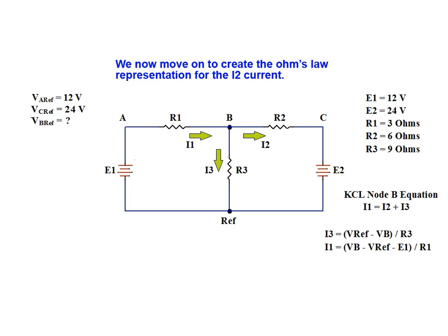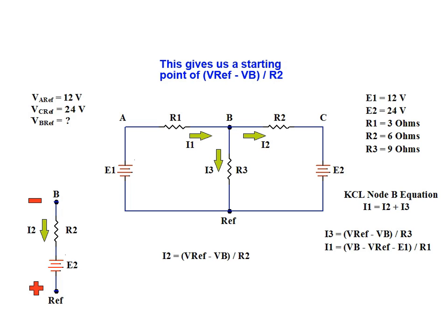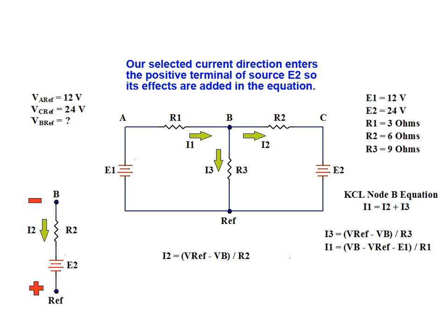Lastly, we move on to create the Ohm's law representation for the I2 current. In order for current to flow in our selected current direction, Vref must be at a higher potential than Vb. This provides a starting point for our I2 equation of Vref minus Vb, all divided by R2. However, our selected current direction enters the positive terminal of source E2, which results in the value of E2 over R2 being added to the equation for the I2 current.